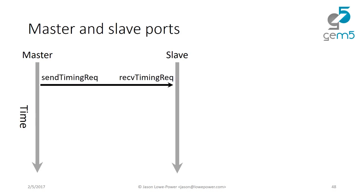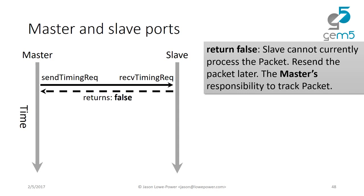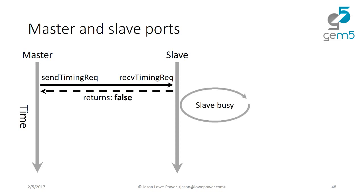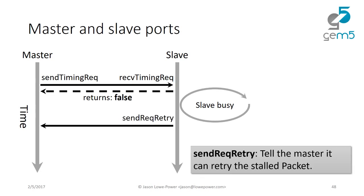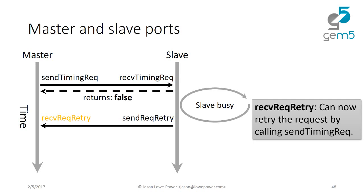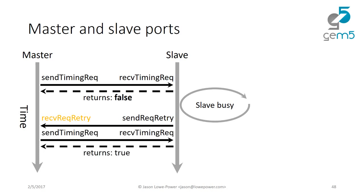If a slave returns false, it cannot currently process the packet — maybe it's processing something else. By returning false, you say 'resend the packet at a later time,' and the master is responsible for tracking that packet and resending it. The slave is busy for some amount of time, and when it becomes unbusy it calls sendRequestRetry, which calls receiveRequestRetry on the master side. You must implement receiveRequestRetry, which usually just calls sendTimingRequest again with the saved packet. But receiveTimingRequest might return false again if a resource is contested, so you can loop a couple of times.